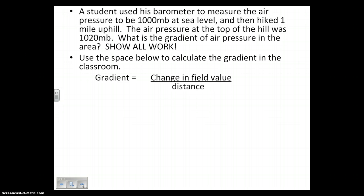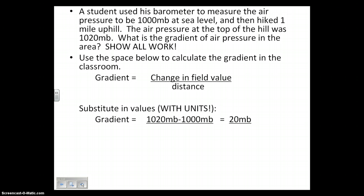We have change in field value over distance. We have written our formula as we always do - WSS. Then we substitute in our values. We've got 1020 millibars and 1000 millibars. That was the change in field value. From one location, what was the value? It was 1000. And then the new location, it was 1020. We subtract those and that gives us a nice even 20 millibars. Distance - you don't even need to do anything. You're given a mile. So what's 20 divided by 1? 20.